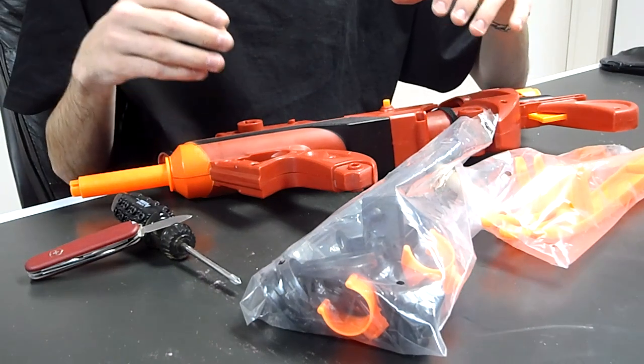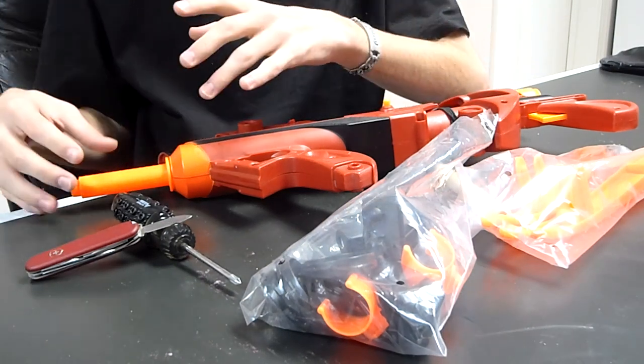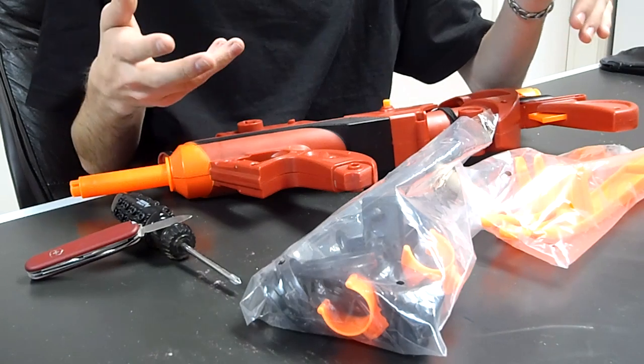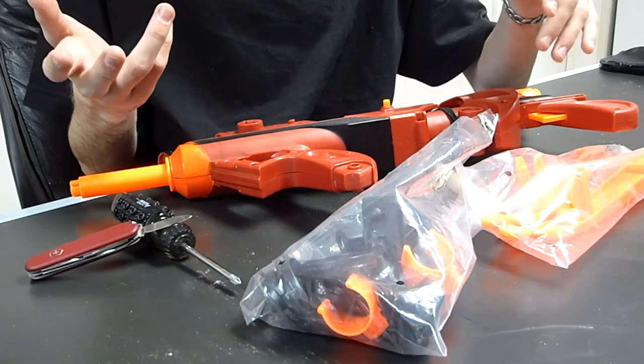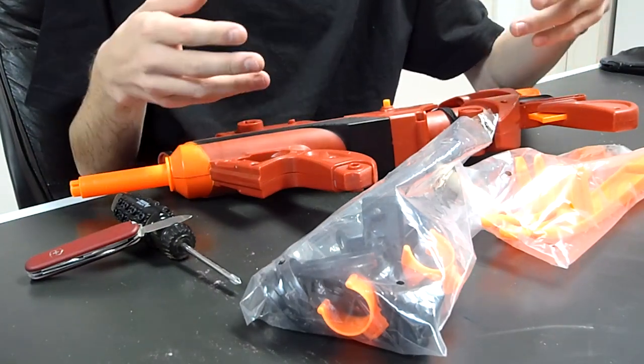Now the only problem with it is that it shoots the arrows, not the micro darts. The two things we're going to do is take out the air restrictor and adapt it to shoot micros.